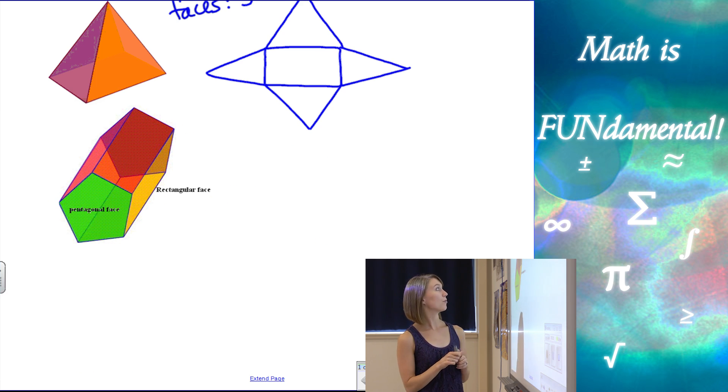Next we have what's called a pentagonal prism. We have two pentagons, and they're connected with a series of rectangles. This one is going to be a little more complicated to draw, but it's not too bad.